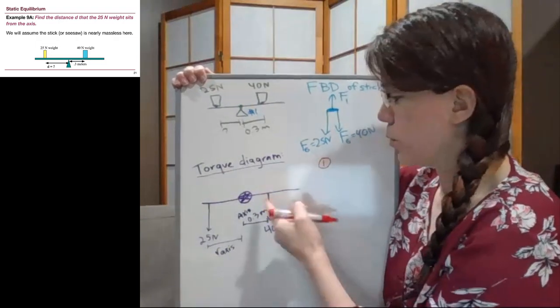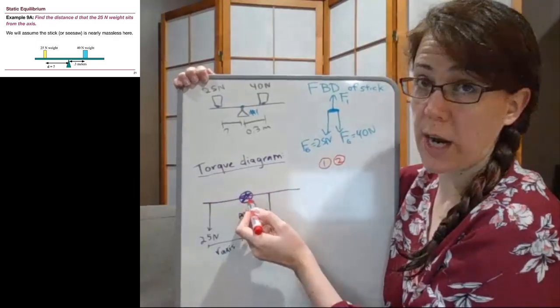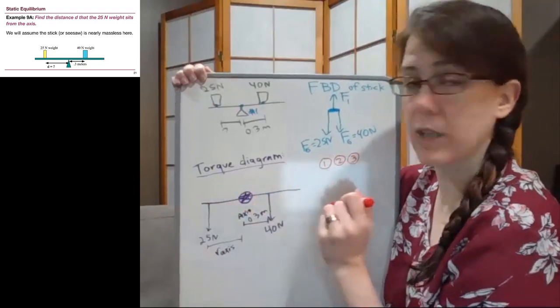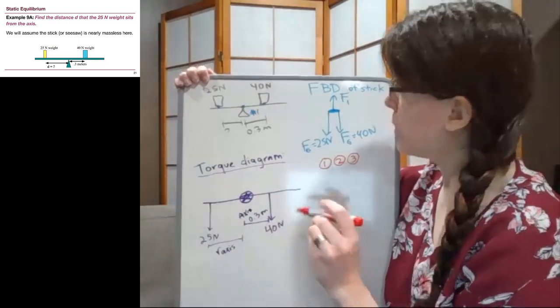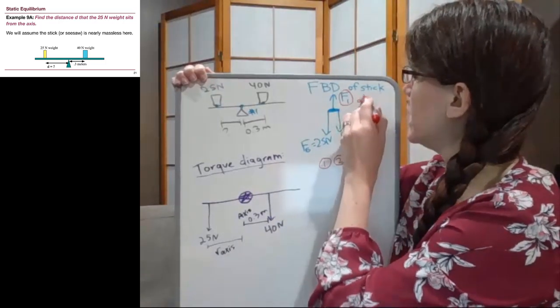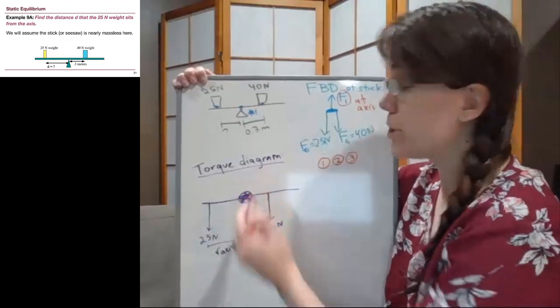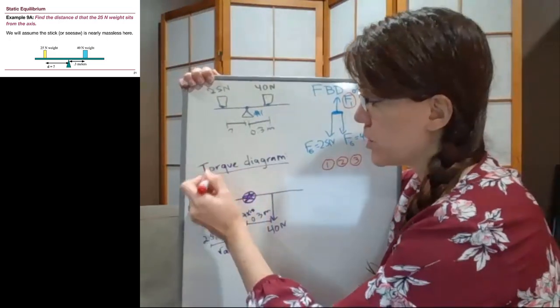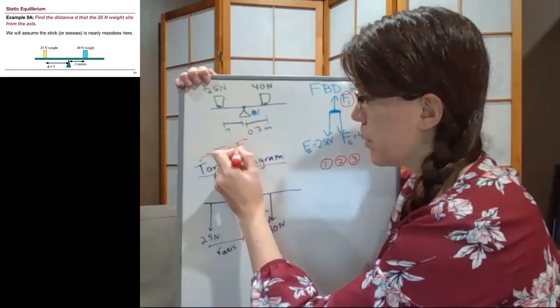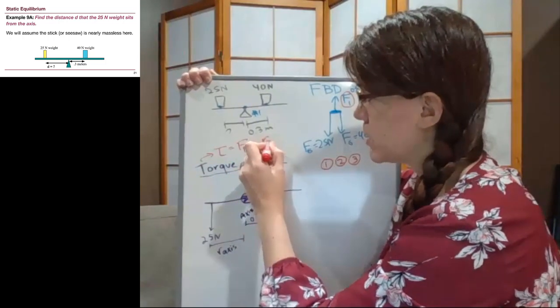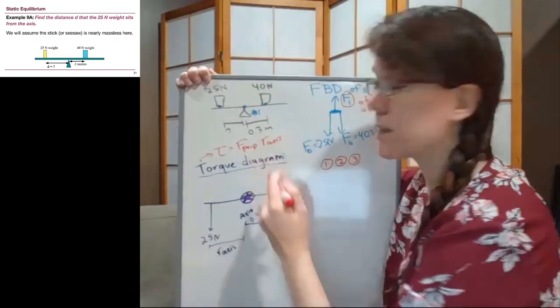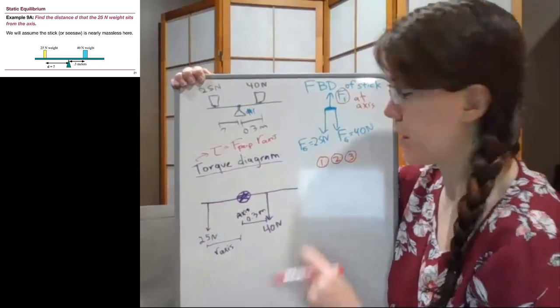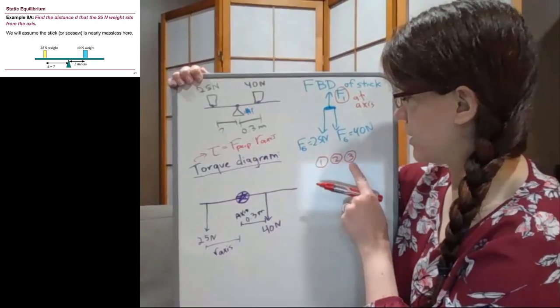The last important thing for the torque diagram, and I'm going to put it in red so that we can more easily notice it. Let's list what we did so far. The first thing we did was we drew the stick. The second thing we did was we chose our axis. The third thing we did was draw all of the forces that are acting away from the axis. One thing to note, this F1 here is at the axis, and so we shouldn't even put it in our torque diagram.